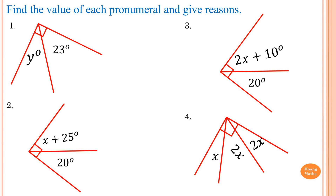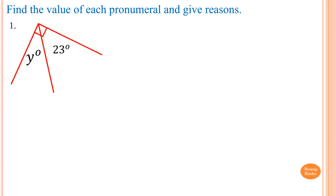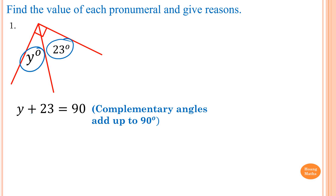Please stop the video and try this one yourself. To find y, we know that y and 23 degrees are complementary angles. So y plus 23 is equal to 90, and the reason is: complementary angles add up to 90 degrees. To solve for y, we minus 23 on both sides. So 90 minus 23 is 67. Therefore, y is equal to 67.